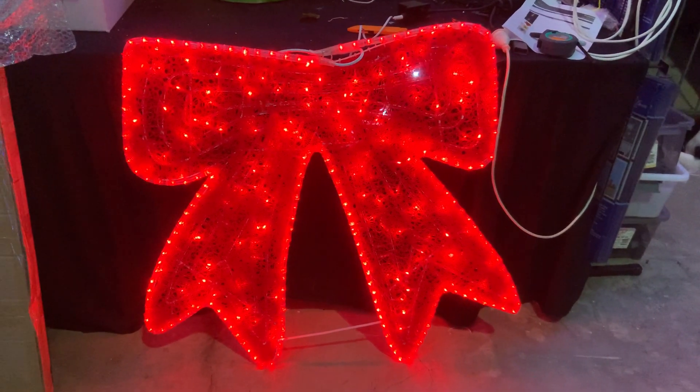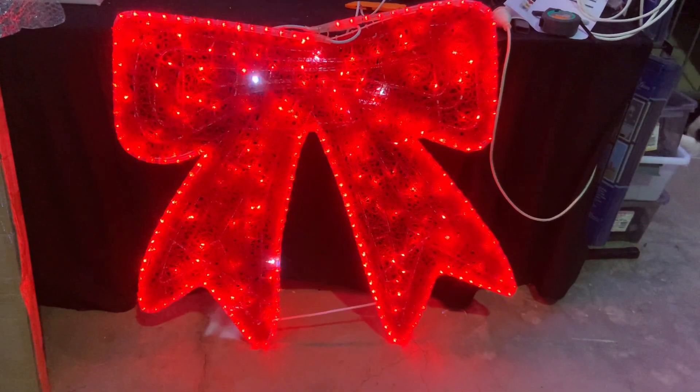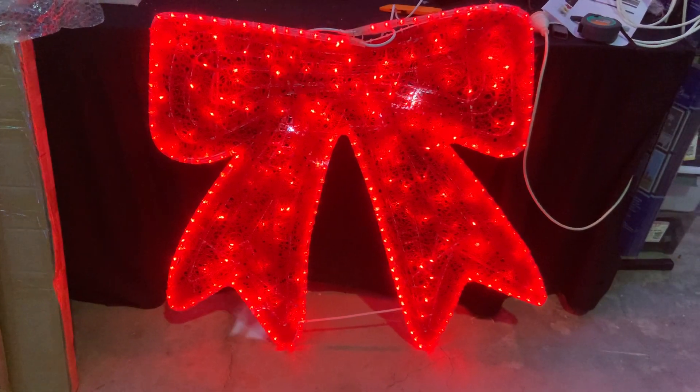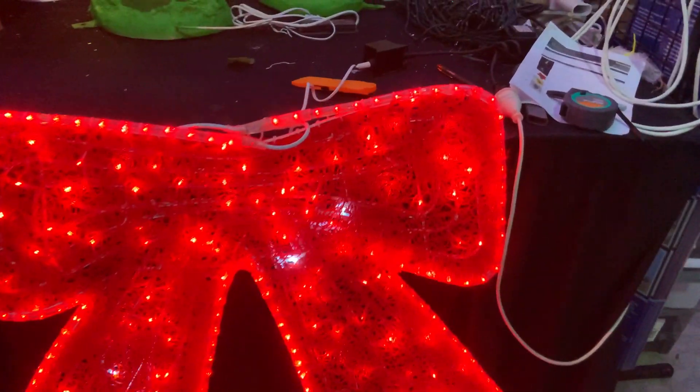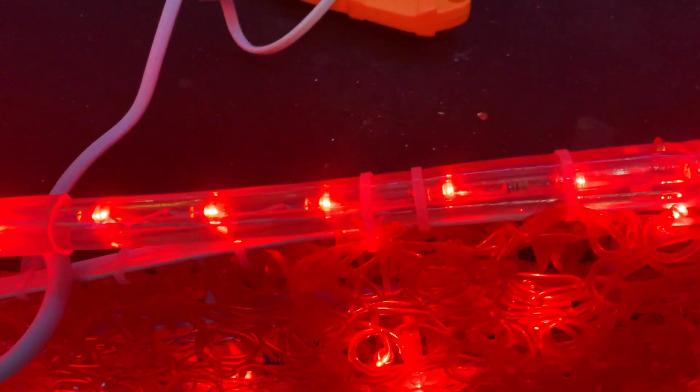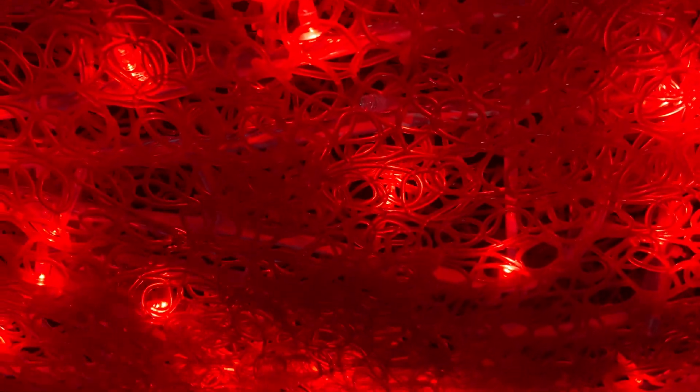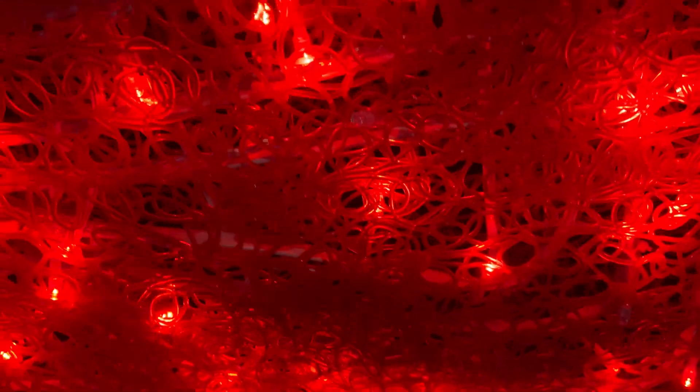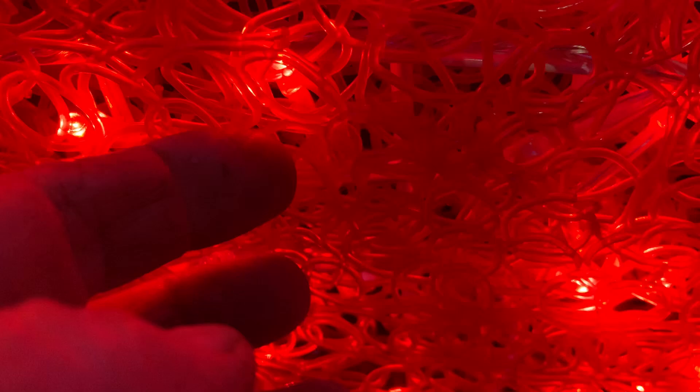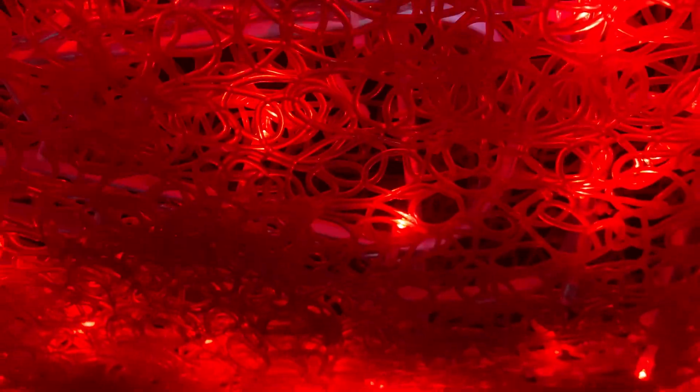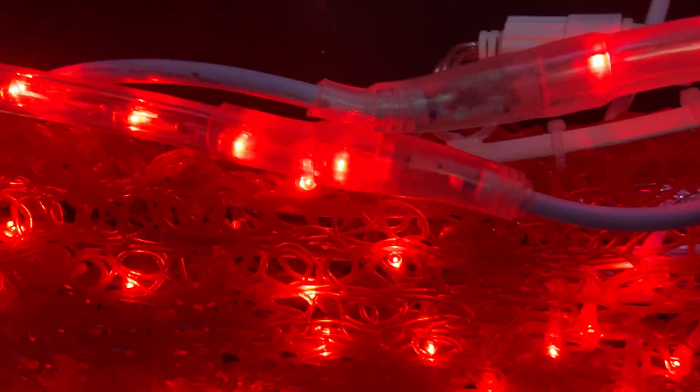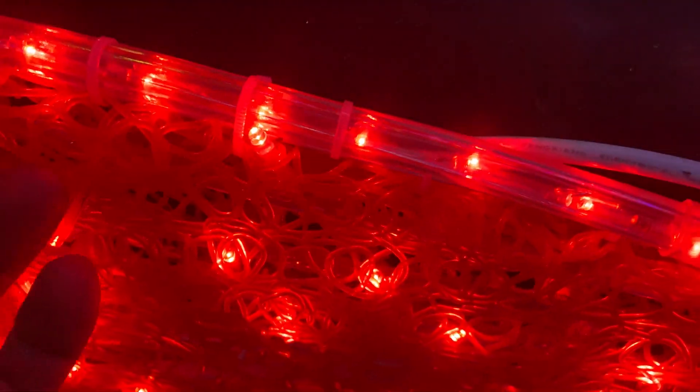So this red rope light bow has red rope light on the outside, 13mm, with string lights on the inside, and then it's covered in a soft ABS sheeting so it's not brittle and will withstand a little bit of pressure and force.